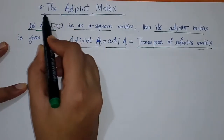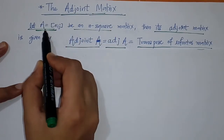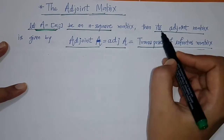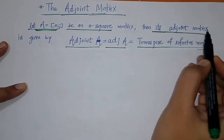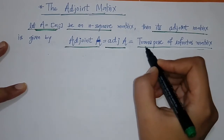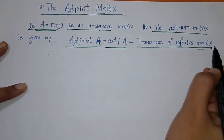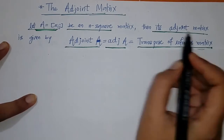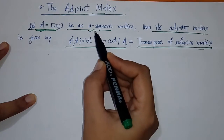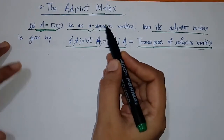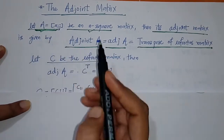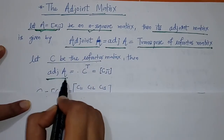Hello everyone, today we are going to see the adjoint matrix. If we have a given matrix A which is a square matrix, then its adjoint matrix is given by the adjoint of A, and it equals the transpose of the cofactor matrix. If we have matrix A as an n×n square matrix, we can find its cofactor matrix.